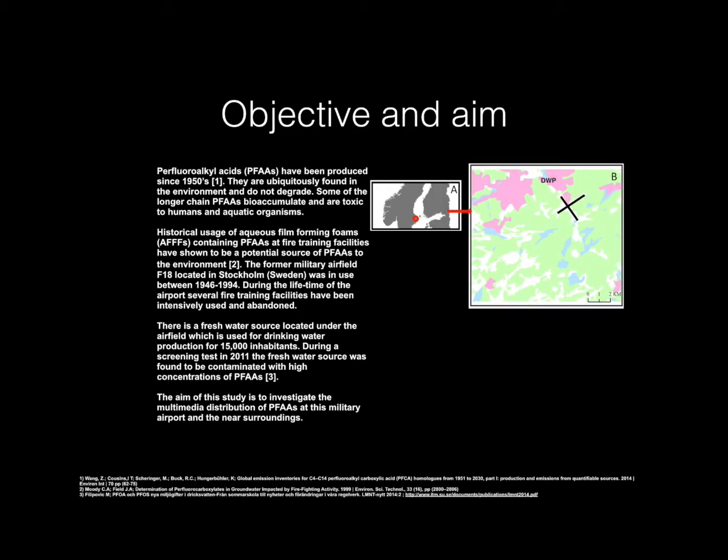On the figure to the right, on the left side, figure A, we can see a red ring which marks where Stockholm is on the map. On the right side figure we can see a black cross which shows where the landing strip of F-18 is.